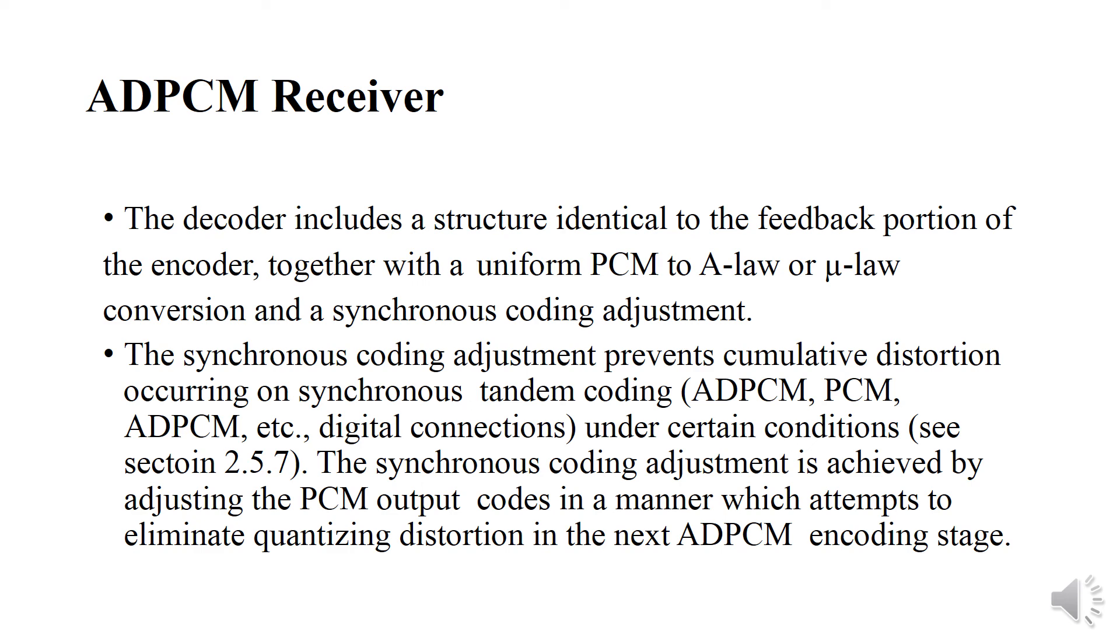The ADPCM receiver: The decoder includes a structure identical to the feedback portion of the encoder, together with a uniform PCM to A-Law or Mu-Law conversion and synchronous coding adjustment. The synchronous coding adjustment prevents cumulative distortion occurring on synchronous tandem coding under certain conditions. The synchronous coding adjustment is achieved by adjusting the PCM output codes in a manner that attempts to eliminate quantizing distortion in the next ADPCM encoding stage.